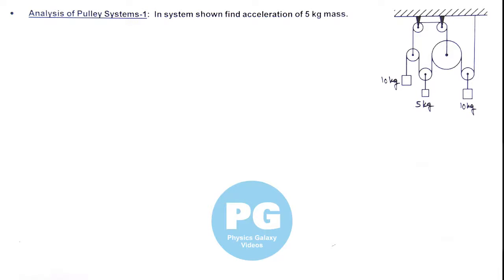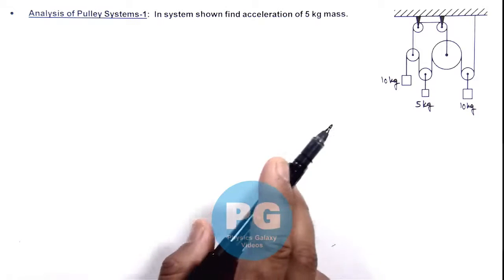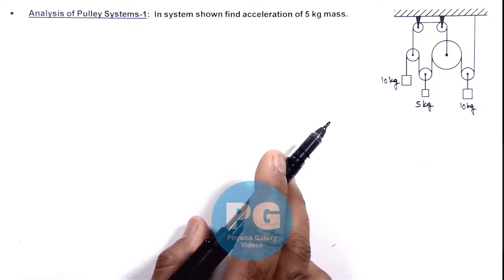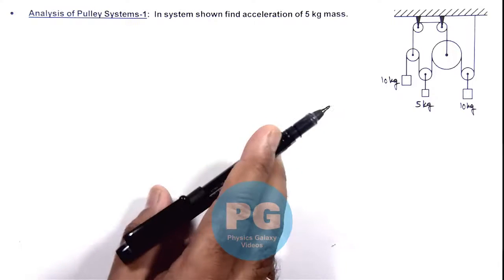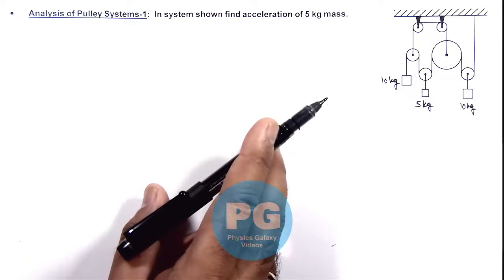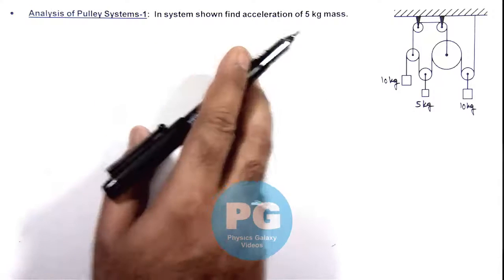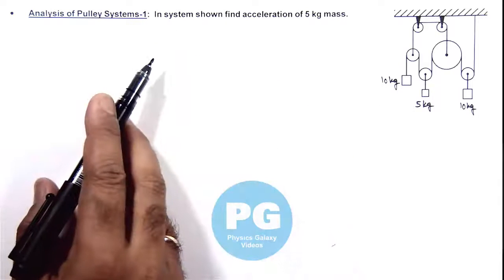In this illustration, we'll analyze the pulley system shown here in the figure. We are given that three masses are hanging from a pulley system. We can assume all pulleys and strings to be ideal, and we are required to find the acceleration of the 5 kilogram mass.